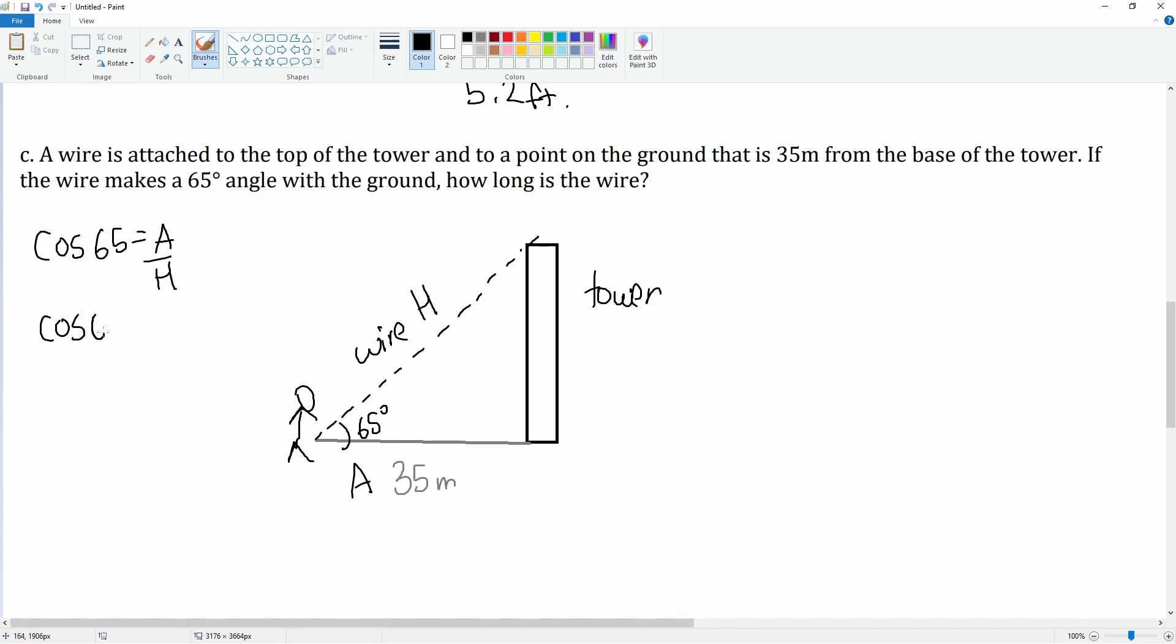Cosine of 65 is going to be equal to 35 over h. Cross multiply, it's h times cosine 65 is equal to 35.